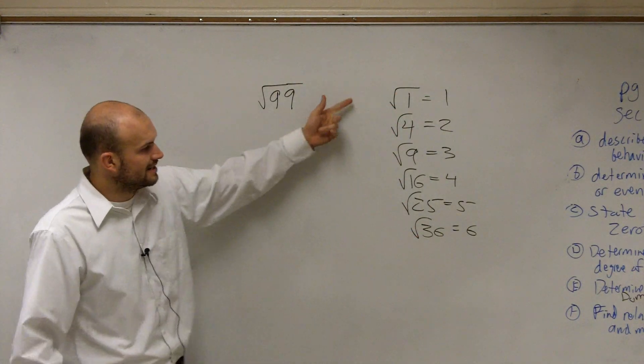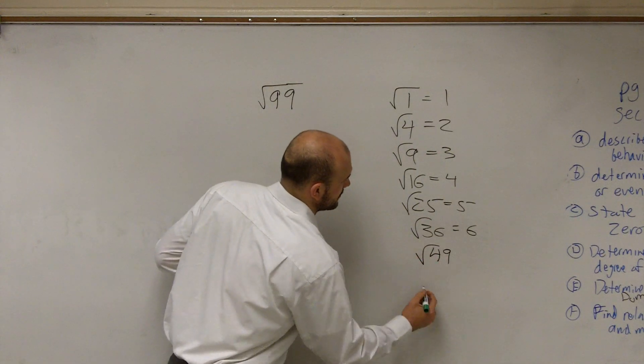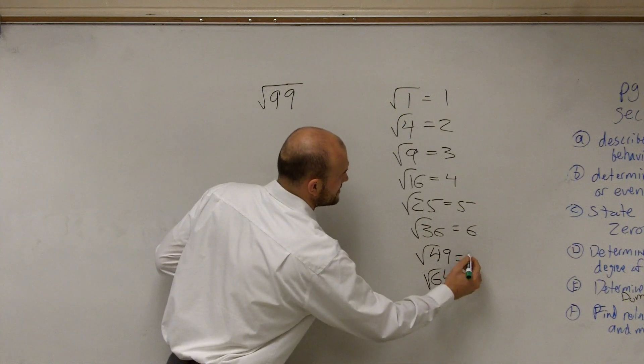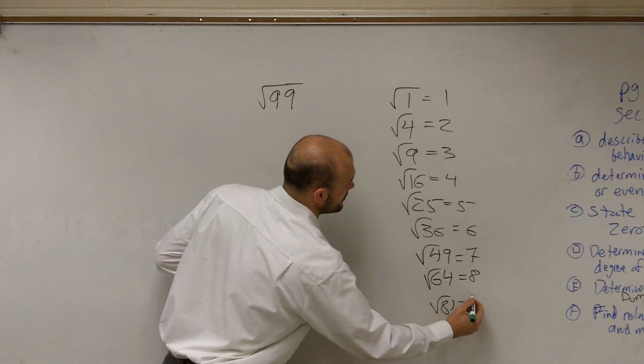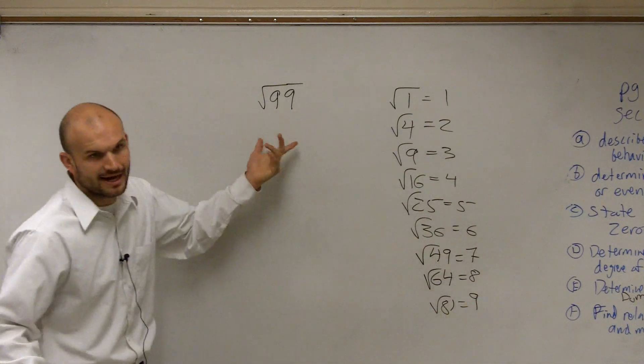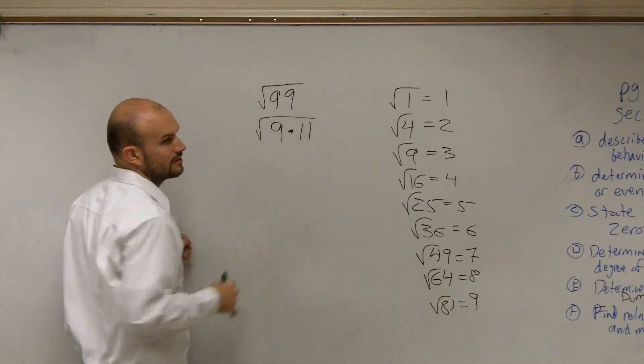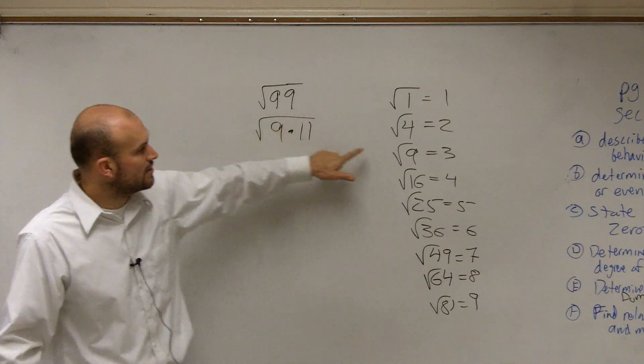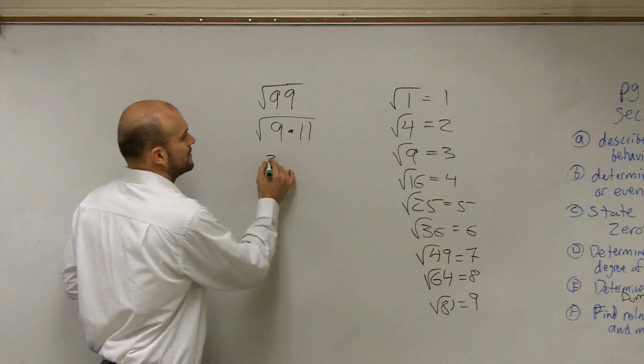So I look at this and say, out of these numbers—and you can keep going up—which of these numbers can I take the square root of that divides into 99? You say, well, I can break it up into 9 times 11. We know the square root of 9 equals 3. We don't have the square root of 11, right? So we just leave it under the radical.